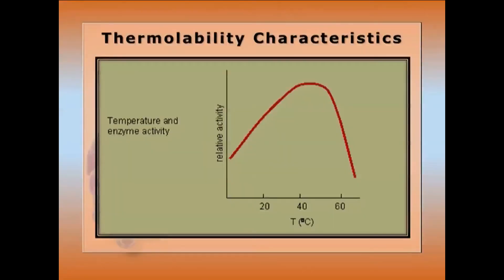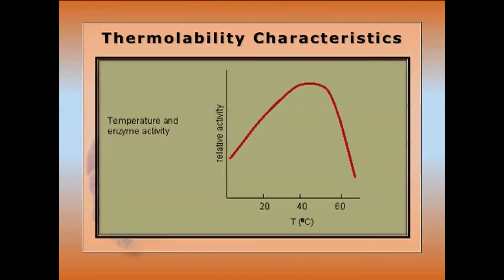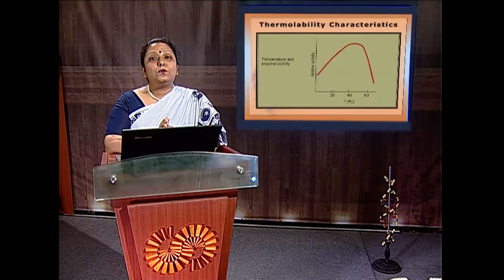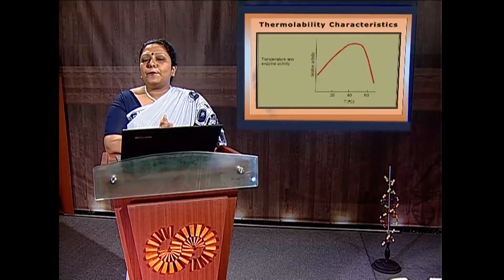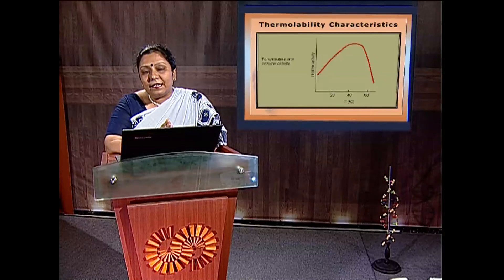Thermolability: enzymes are very heat labile. The catalytic reaction rate increases with increasing temperature — a 10°C temperature increase brings a 50–100% reaction rate change, while a 1–2°C increase brings a 10–20% change. However, beyond a certain maximum temperature the enzyme becomes irreversibly denatured and inactivated. In the case of mammalian enzymes, they coagulate above 60°C.